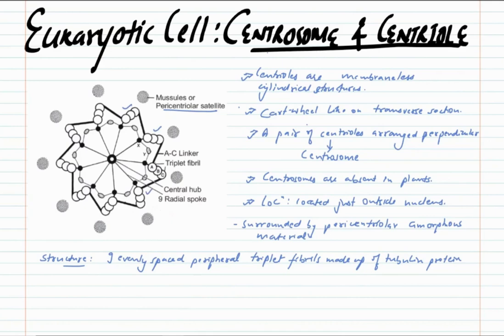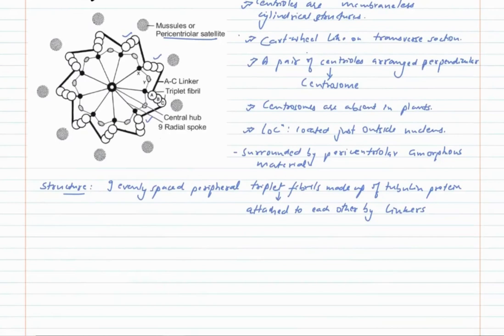These triplets are named A, B, and C. The triplets are attached to each other by linkers. Along with nine triplets in the periphery, we also have a central hub.